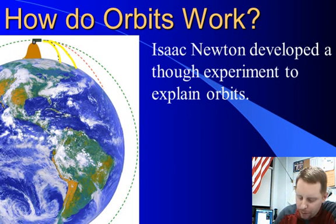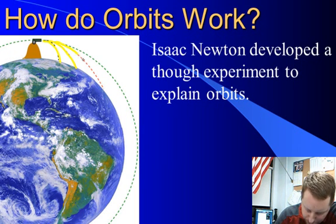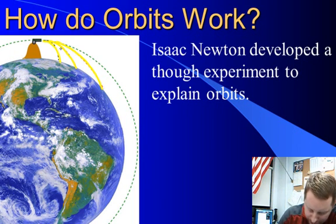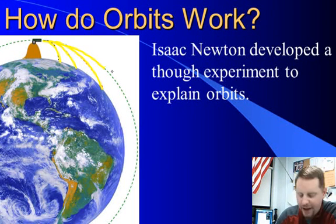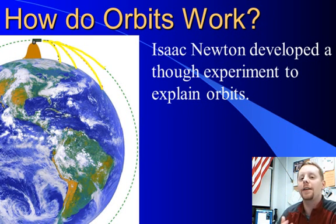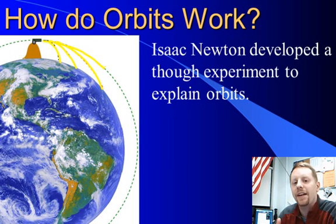If we shot it with even more velocity, it travels even further around the curvature of the earth before it hits the earth. And if we shot it with enough velocity following this green path, the projectile, the cannonball, would be moving so fast that the earth would curve away underneath it. So it's constantly falling but it's moving so fast that it's staying at the same altitude above the earth because the earth curves away underneath it, because the shape of the earth is roughly spherical.